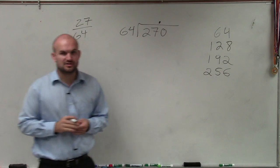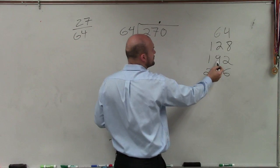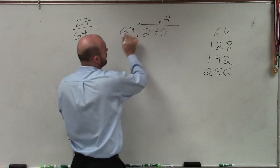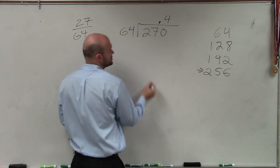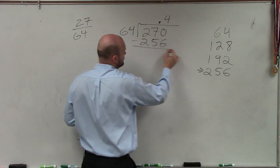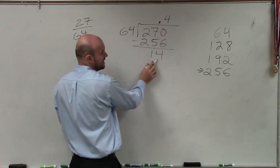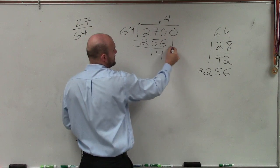I can't add another 64, right? Correct. So therefore, this goes in there 1, 2, 3, 4 times. 4 times 64 is 256. Then I subtract the rows, which is going to give me 14. 64 does not go into 14, so I bring down another zero.